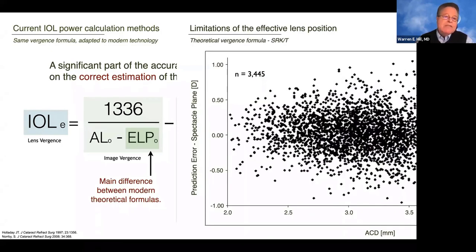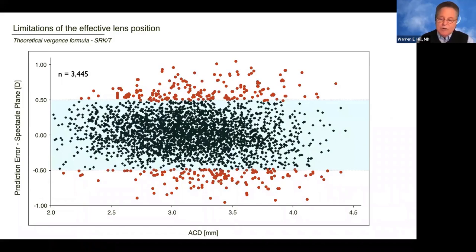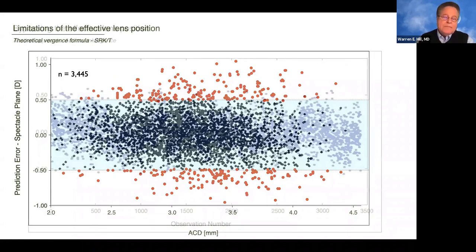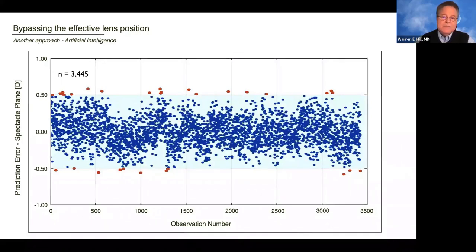Just by way of demonstration, here's a database of about 3,400 patients. Using the SRK/T formula, there's our half-diopter accuracy and our accuracy outside half-diopters — about 70 to 80%, which is very common. Now let's take that same database and fit it to an artificial intelligence model. There's our half-diopter accuracy, and these are the cases outside. You can see that exercise alone demonstrates the amazing versatility of this particular approach.